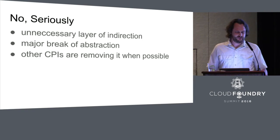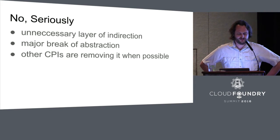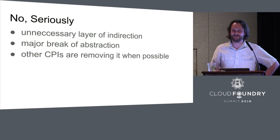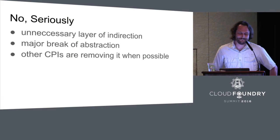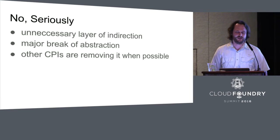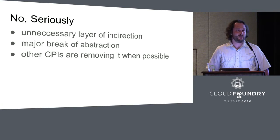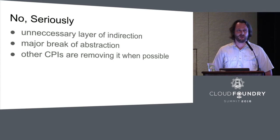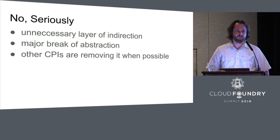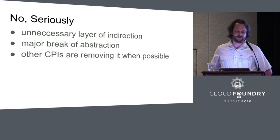Okay, maybe that was humorous or not — I'm coming to some seriousness. The registry is an unnecessary layer of indirection, and it's actually a single point of failure that wouldn't be necessary. The director could just talk to the agent directly. It's a major break of abstraction — there are actually subclasses of some Ruby class in there for AWS and for OpenStack. And as seen in the presentation about the Google CPI, newly created CPIs are actually shying away from using it.